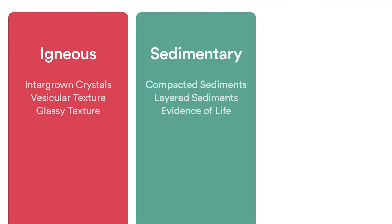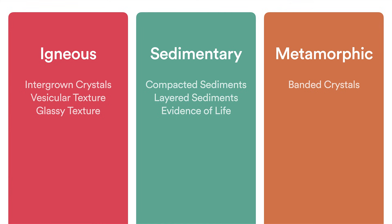So those are some examples for you. Just to sum up: igneous rocks have either intergrown crystals, a vesicular texture, or a glassy texture. Sedimentary rocks are going to show compacted and cemented sediments, perhaps layers of sediments, or some evidence of life — whether it be fossils, footprints, or something along those lines. And finally, metamorphic rocks are going to display banding — banded crystals that are often distorted.